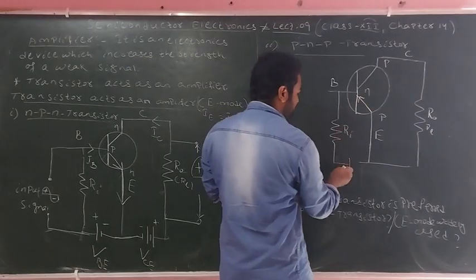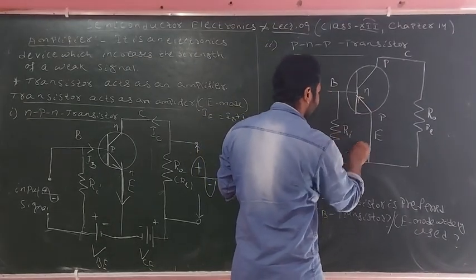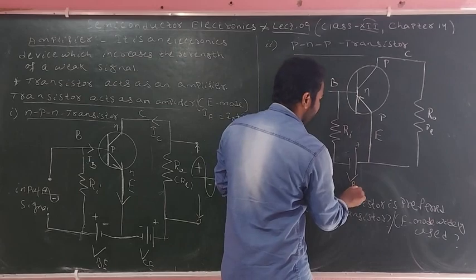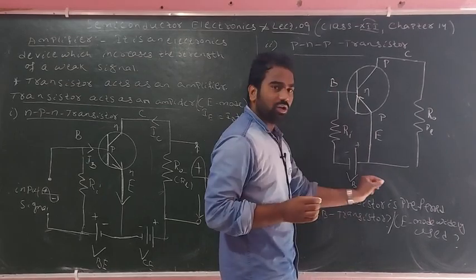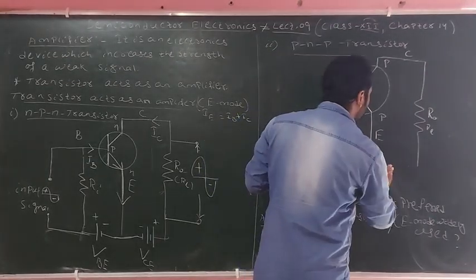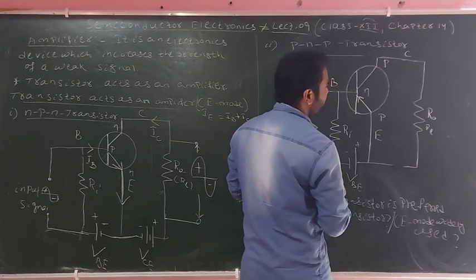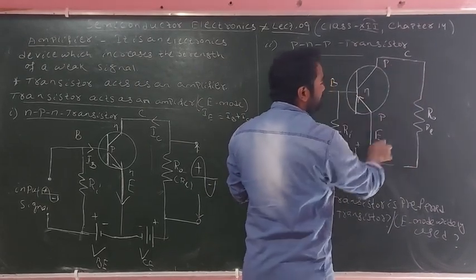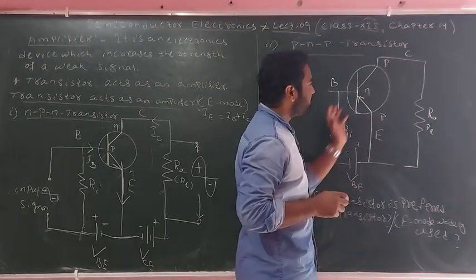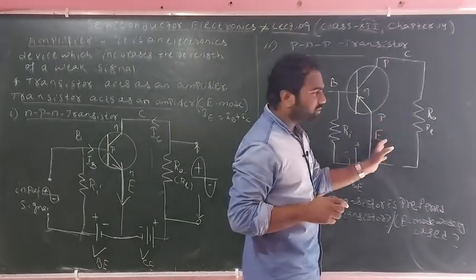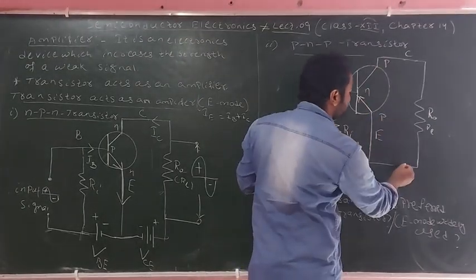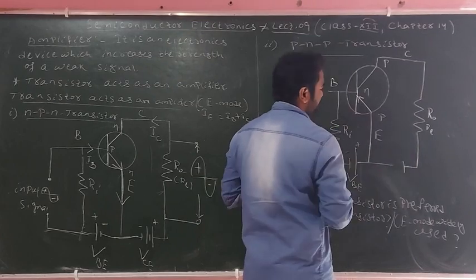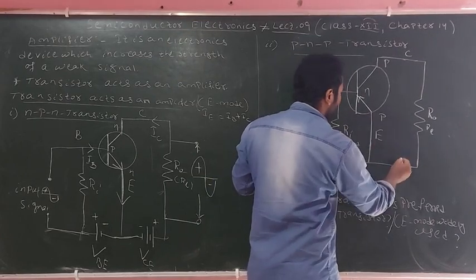For the PNP transistor in CE mode, the base-emitter voltage VBE is applied. The input resistance is on the input side and the output resistance is on the output side, with forward biasing for the emitter-base junction — N-type negative, P-type positive terminal for forward biasing.